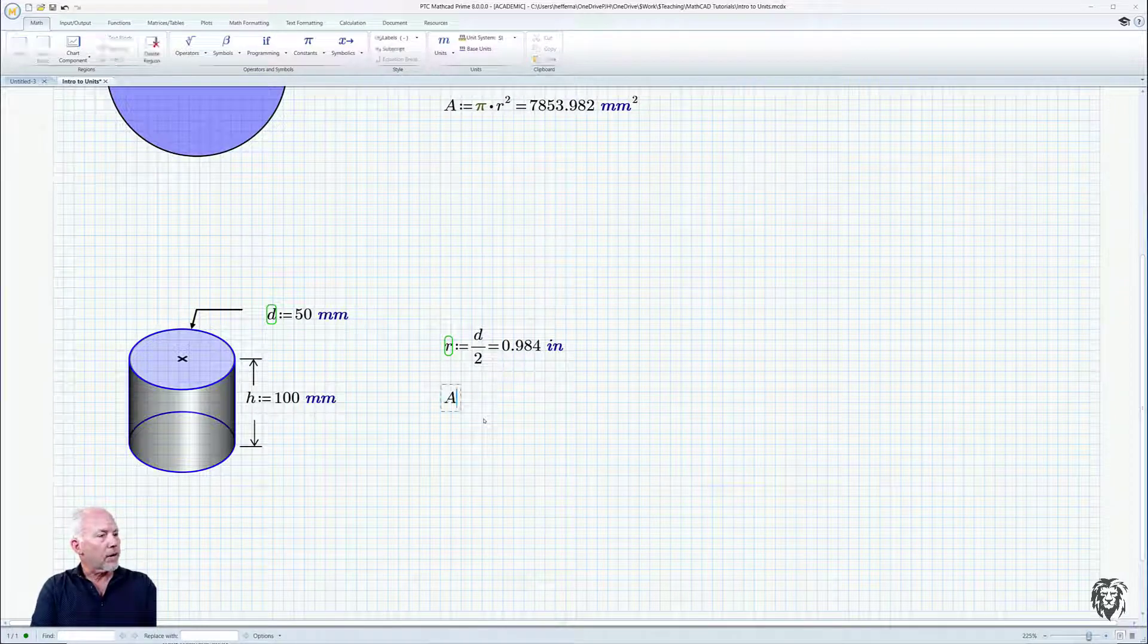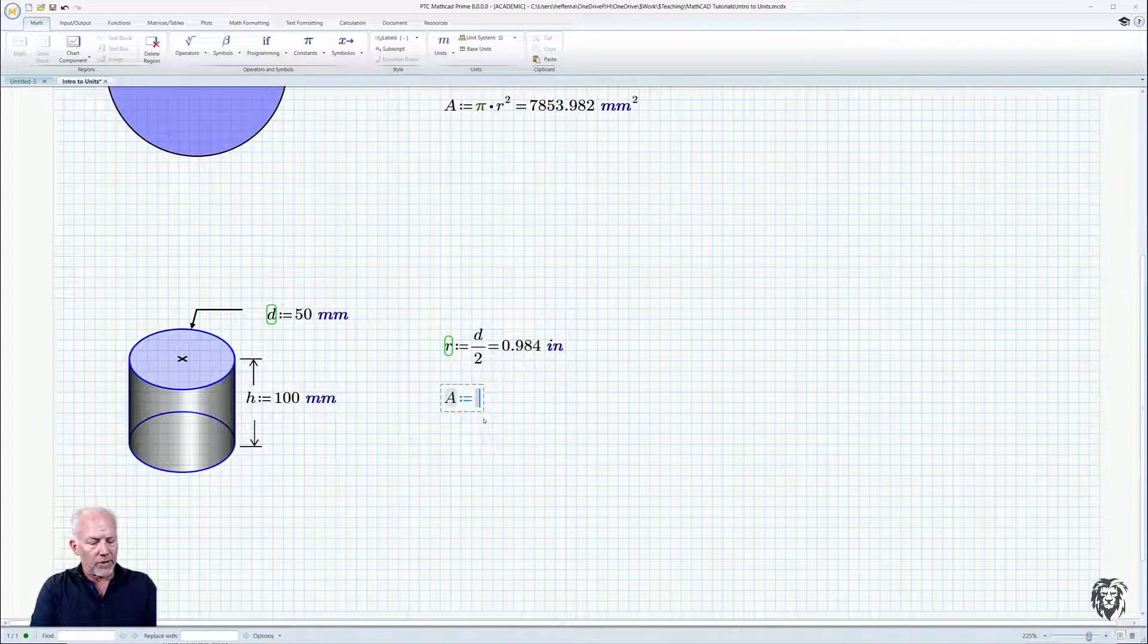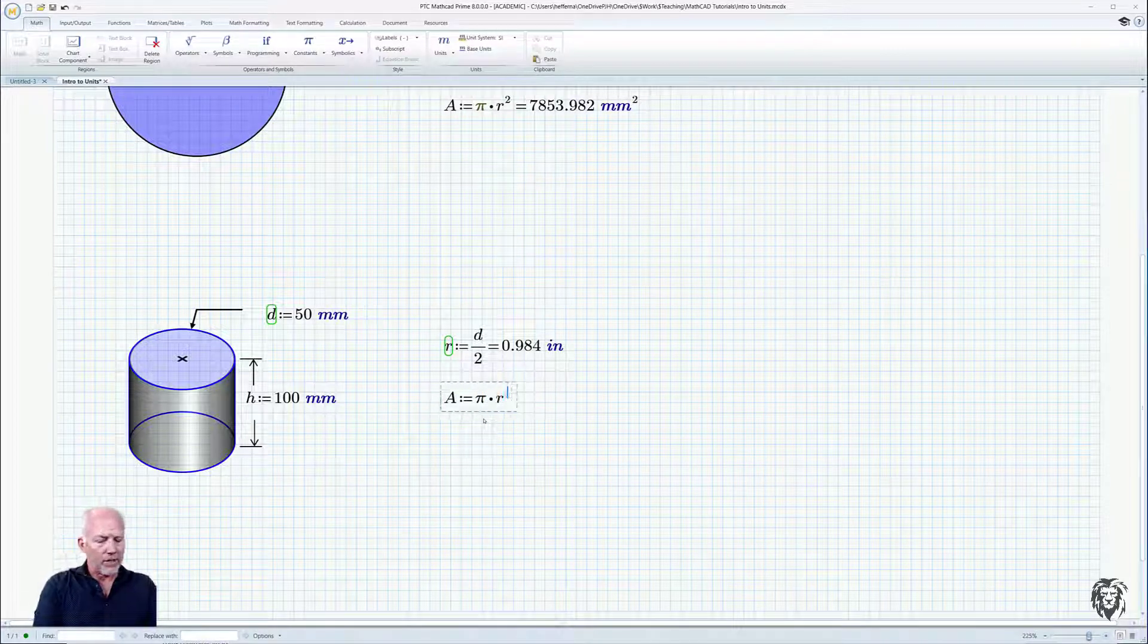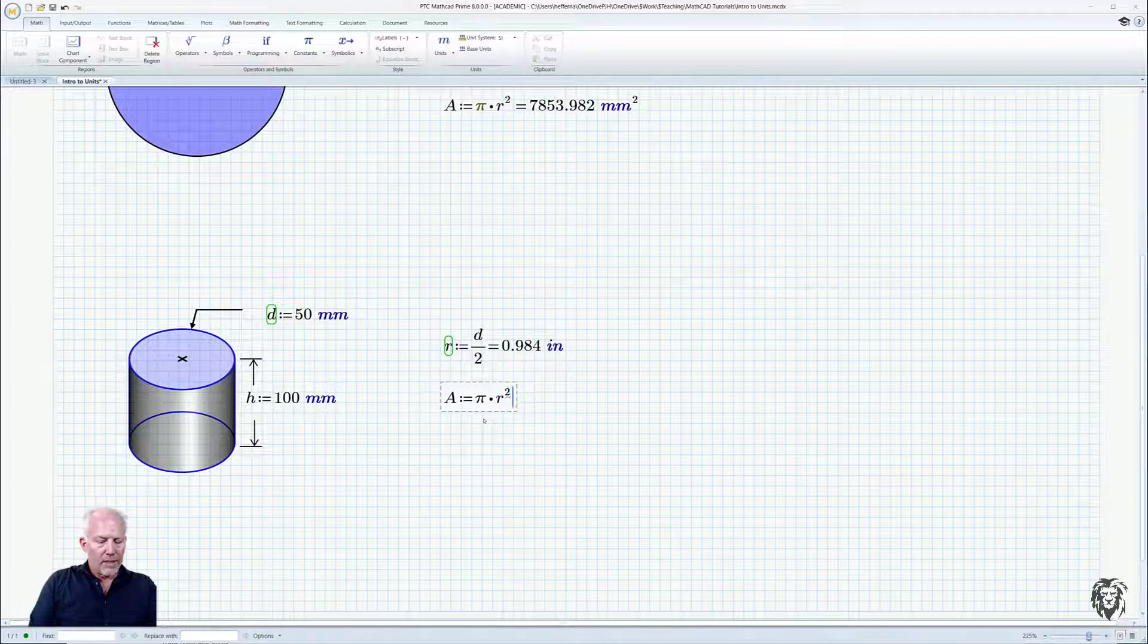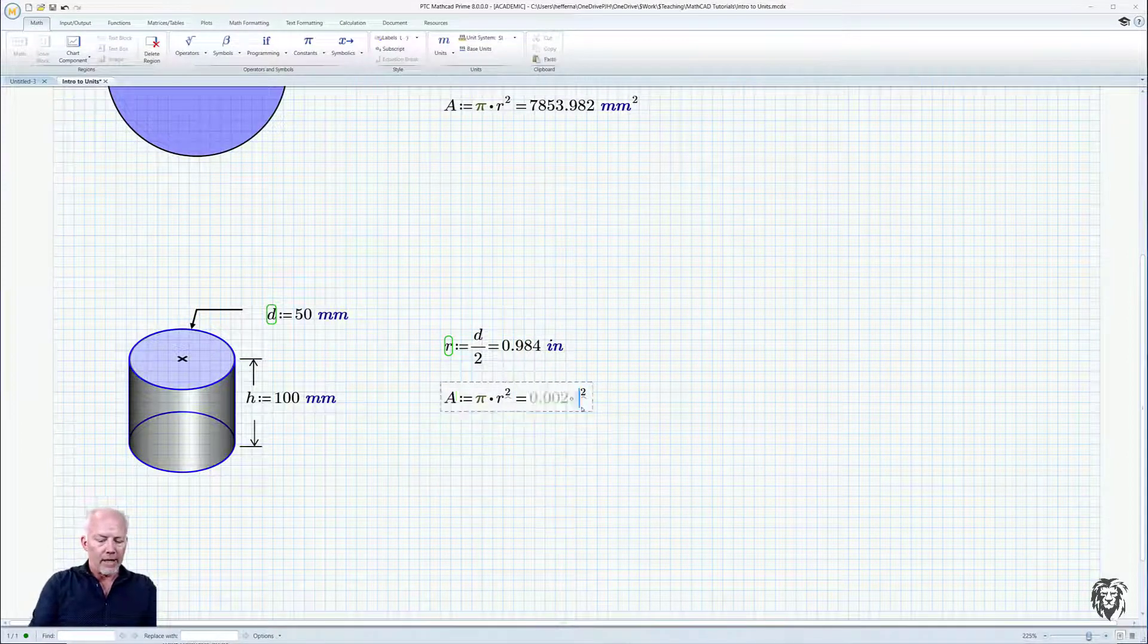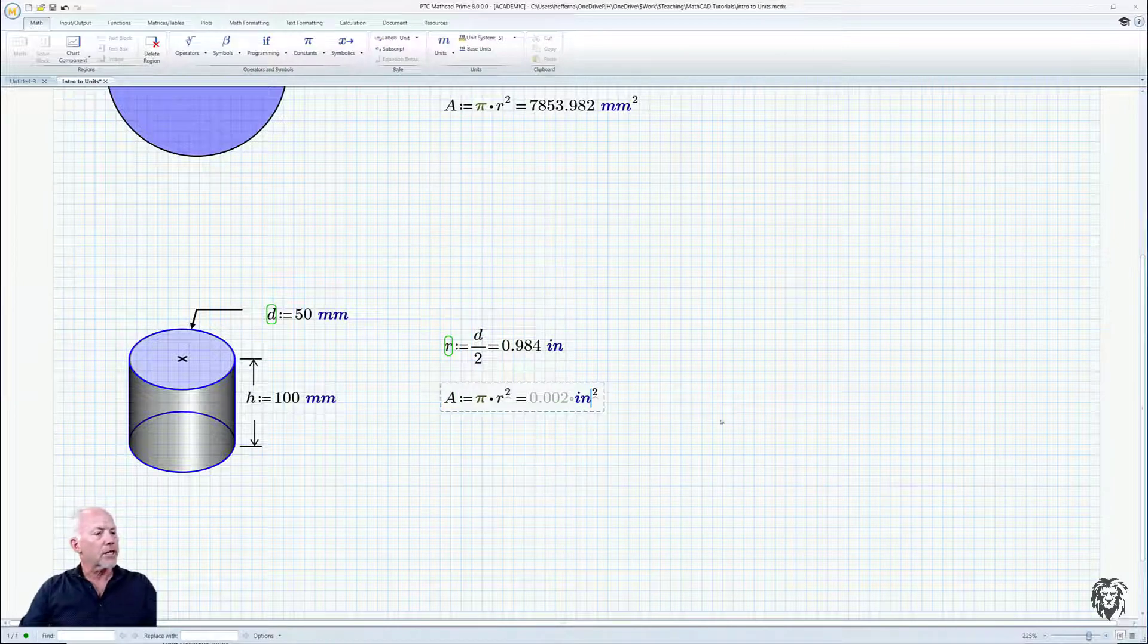And so now we'll do our area equal to pi times radius all squared. And that's equal to, and you see we get meters squared, but we can do that in inches squared. So we'll just change that out.